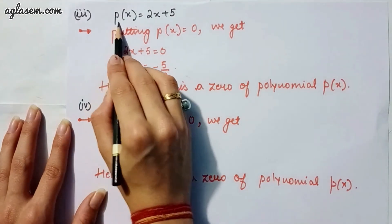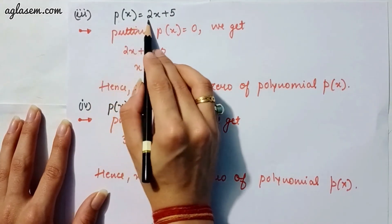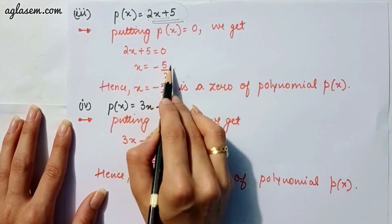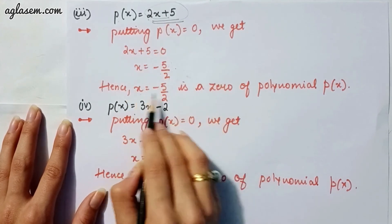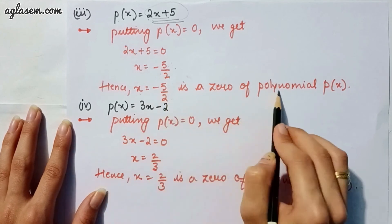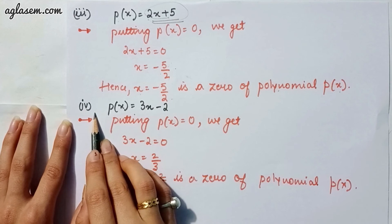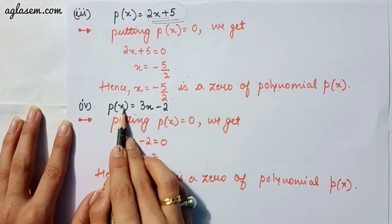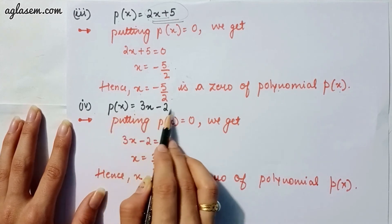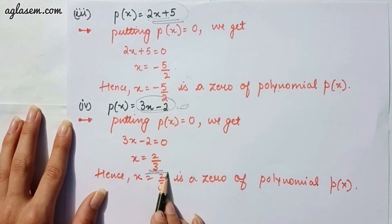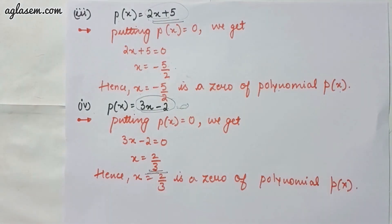Part 3: p(x) = 2x + 5. Putting p(x) = 0, we get x = -5/2, so x = -5/2 is the zero. Part 4 and the last part: p(x) = 3x - 2. Putting p(x) = 0, we get x = 2/3, so x = 2/3 is the zero of the polynomial.